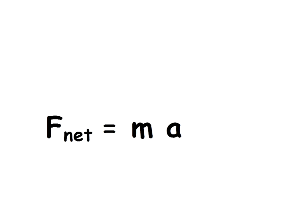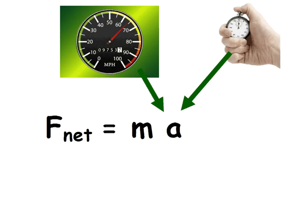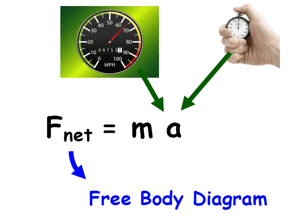Today we're going to be using F_net equals ma for our circular motion problems. We already know how to use the velocity or the period to find the acceleration, and now we're going to be using free body diagrams to find the net force.